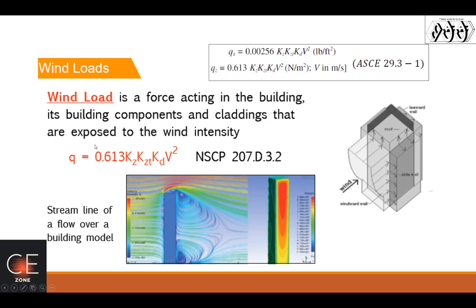How did they come up with this 0.613? So wind is assumed to be kinetic, so the formula there is 1/2 mass times velocity squared. 1/2 times the mass of air, the mass of air is assumed to be 1.25 kg per cubic meter.